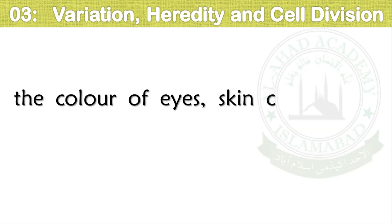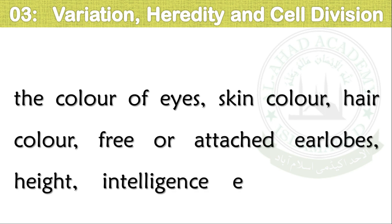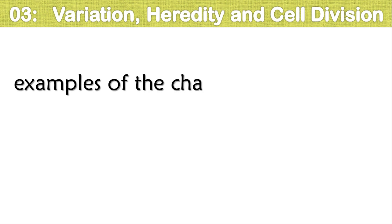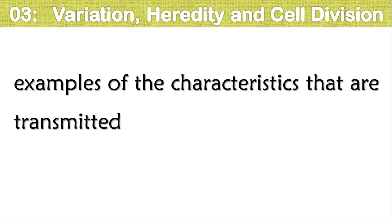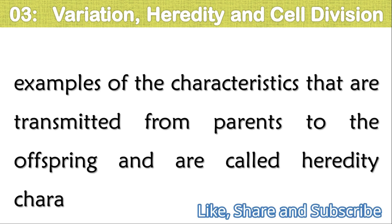The color of eyes, skin color, hair color, free or attached ear lobes, height, intelligence, etc. are examples of characteristics that are transmitted from parents to offspring and are called hereditary characteristics.